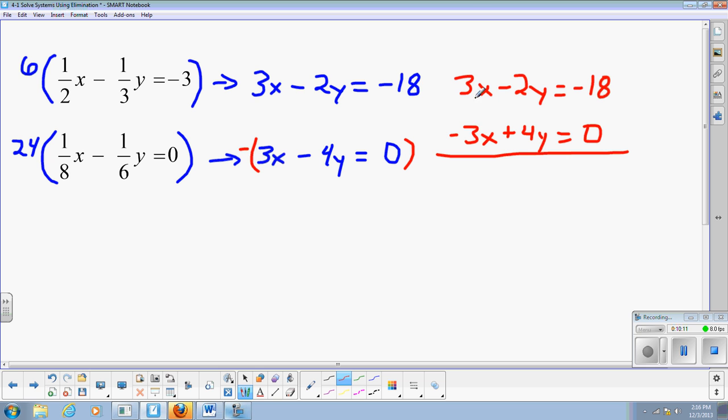Now I have my opposites, 3 and negative 3. So those will cancel. Negative 2 plus 4 is 2y equals negative 18 plus 0. Negative 18. Negative 18 divided by 2. Negative 9.